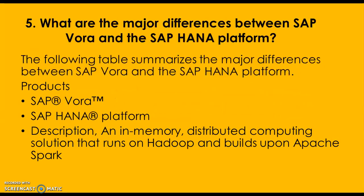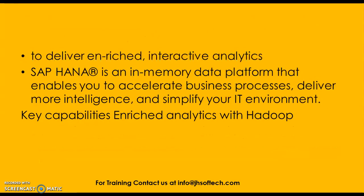What are the major differences between SAP Vora and the SAP HANA platform? SAP Vora is an in-memory distributed computing solution that runs on Hadoop and builds upon Apache Spark to deliver enriched interactive analytics. SAP HANA, on the other hand, is an in-memory data platform that enables you to accelerate business processes, deliver more intelligence, and simplify your IT environment.